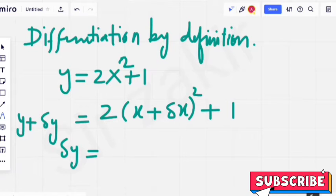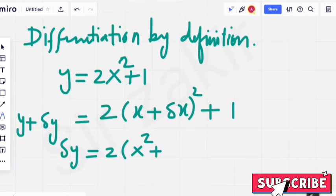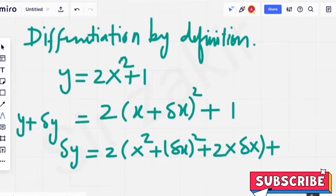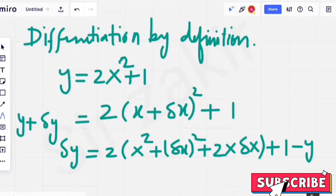Delta y is equal to 2 times. Now whole square can be expanded. x square plus delta x square plus 2x delta x plus 1. If we shift this left hand side y on right hand side it will be subtracted.